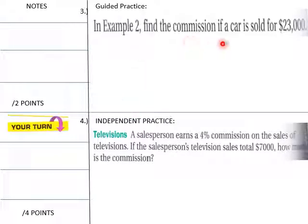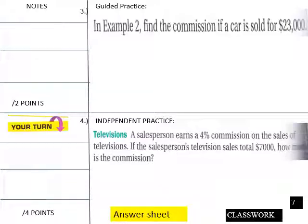Okay. Finding commission if the car sold for $23,000. And then down here, since this is yours, if a salesperson's TV sales total $7,000, how much is the commission with a 4% commission?